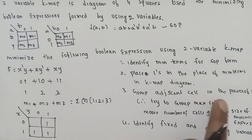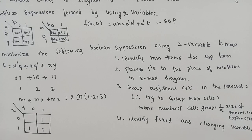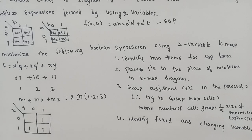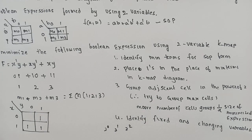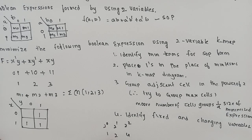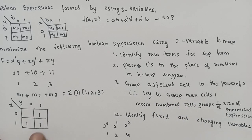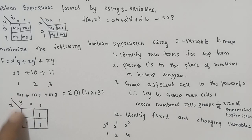Group adjacent cells in powers of 2. You can group cells in a group of 2 or 4. The order is 2 power 0, 2 power 1, up to 2 power n. Here in the 2 variable K-map, the possible groupings are: group of 4, group of 2, or group of 1. The maximum number of cells for 2 variables is 4.